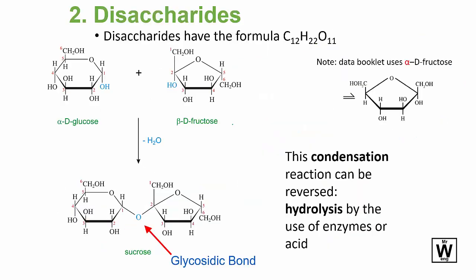For disaccharides, you need to be able to perform the condensation reaction - pull out the water by grabbing a hydrogen from one molecule and an OH from another, and there's the glycosidic bond. We can do the reverse: add the water in and destroy the glycosidic bond - that's hydrolysis.